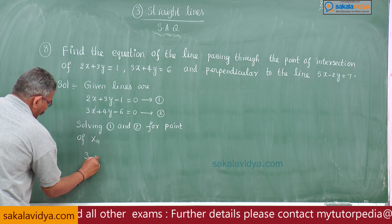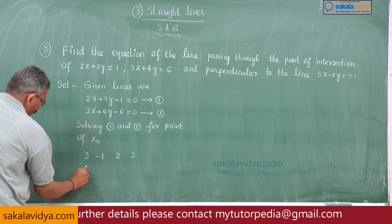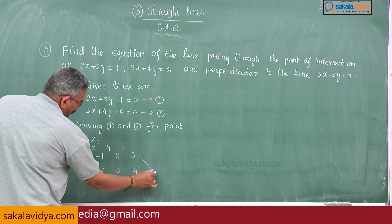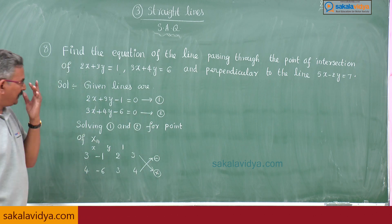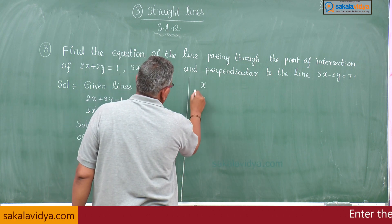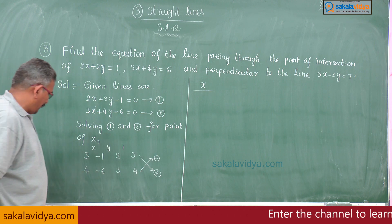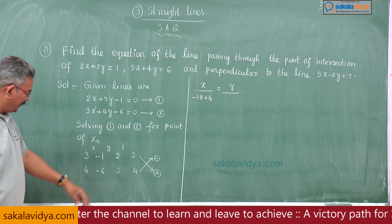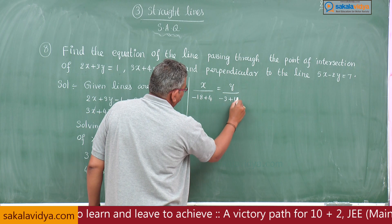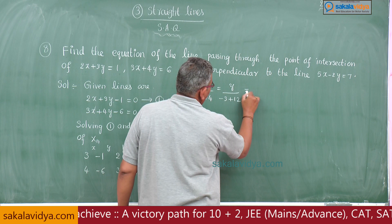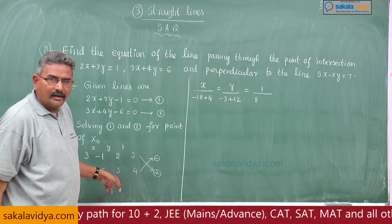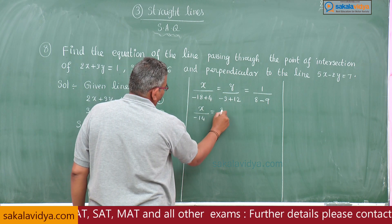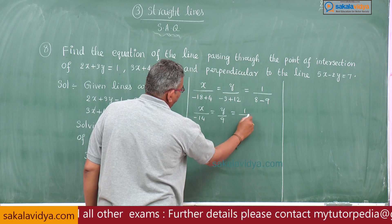We can write the matrix: 3, -1, 2, 3, 4, -6, 3, 4. Here x, y, 1. This is plus, while multiplying we have to add minus sign. Now x by determinant of this matrix -18+4, y divided by, carefully observe, -3 plus -12, 1 divided by 8, 4 to 8 and -9. This is x by -14, y by 9, 1 by -1.